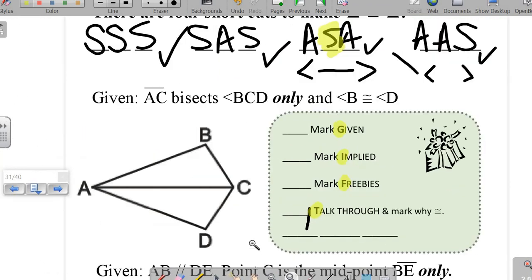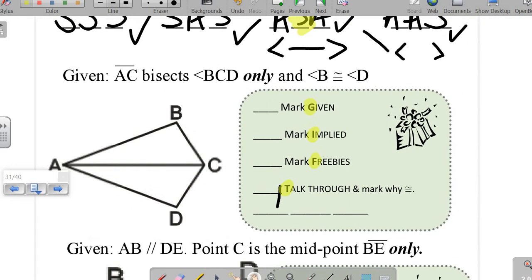Let me give you an example here. We are given that AC bisects angle BCD only. So we trace AC, BCD, sweep, I'm going to write the word bisect, only. Be very careful, it doesn't tell you that it bisects the other side as a given. We are also told that angle B and D are congruent. So hatch mark, hatch mark, we officially have a pair of angles given.